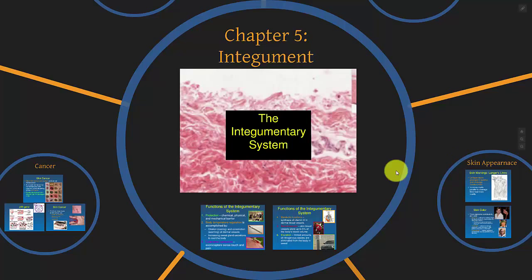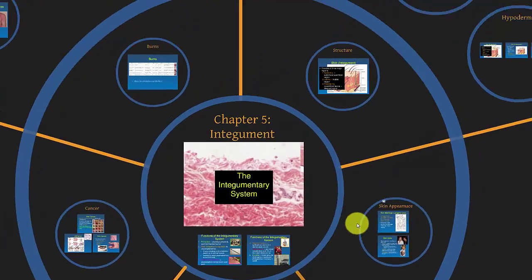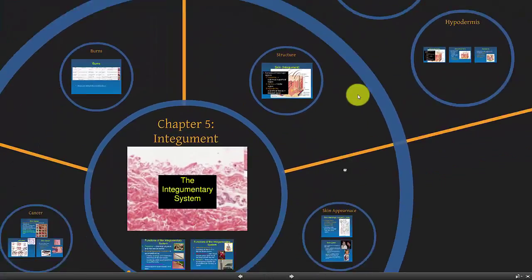I'm going to take a broad view here first. One of the first things we're going to do is functions of the integumentary system. We'll then look at structure — the two, maybe three different layers of the skin. Technically there's the epidermis, the dermis, and then the hypodermis, which is not really part of the skin. It's below the skin, but we will break those down.